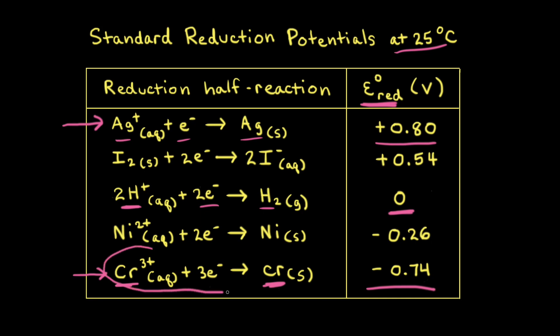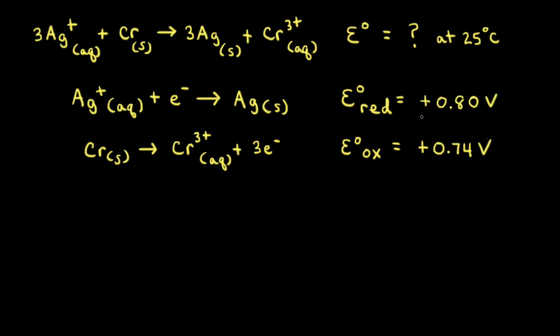Since we need the chromium half reaction written as an oxidation half reaction, if we reverse how it's written, we need to change the sign of the voltage. So the standard oxidation potential becomes positive 0.74 volts. The standard reduction potential for the silver half reaction is positive 0.80 volts, and the standard oxidation potential for the chromium half reaction is positive 0.74 volts.